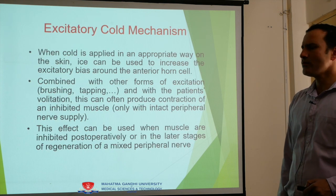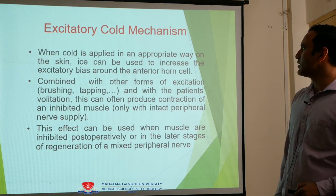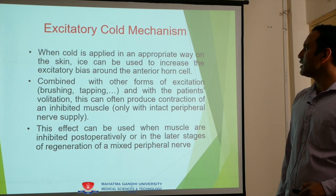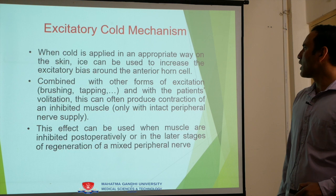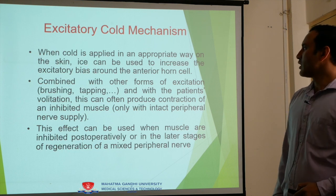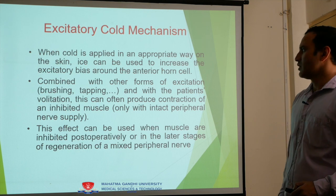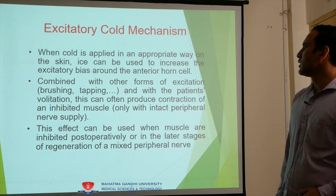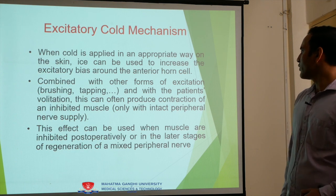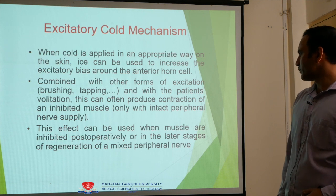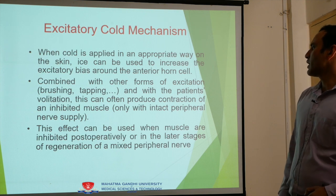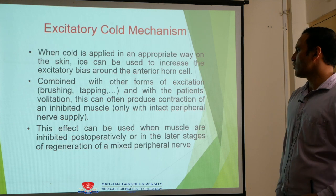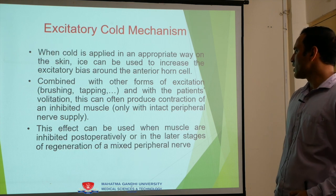The third effect is the excitatory cold mechanism. When cold is applied in an appropriate way on the skin, ice can be used to increase the excitatory bias around the anterior horn cell. Combined with other forms of excitation — such as brushing, tapping, and the patient's volition — this can often produce contraction of an inhibited muscle.